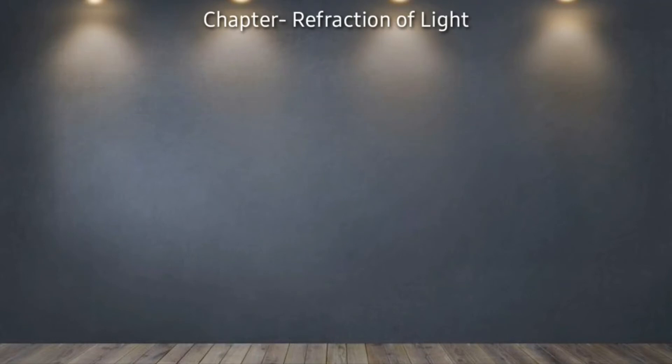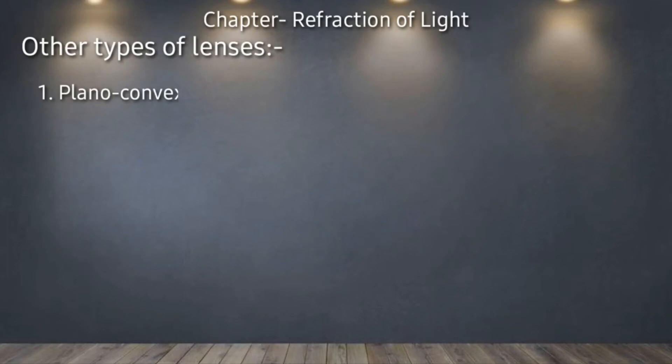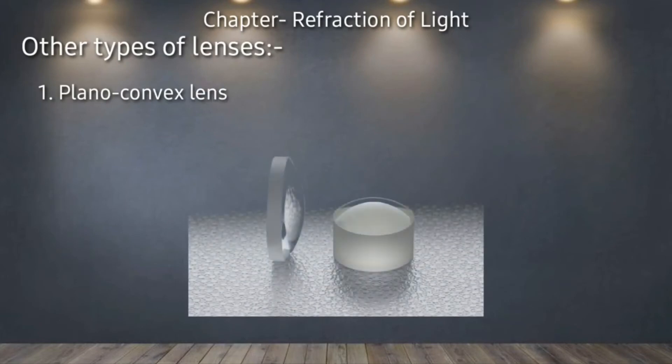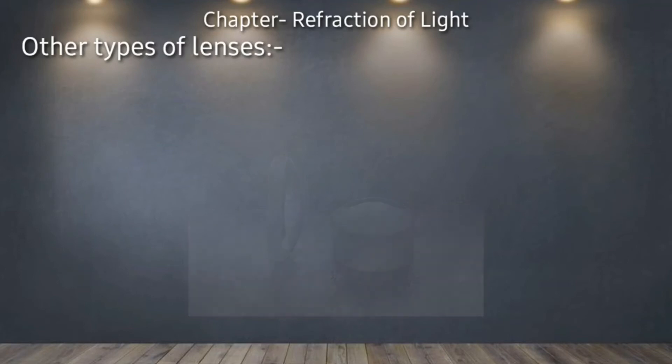Now let's discuss other types of lenses — what kinds of lenses we can see in the convex category. सबसे पहले हमारे पास आता है plano convex lens — एक ऐसा lens जिसकी एक side plane होती है और एक side convex होती है। इस तरह के lens को plano convex lens कहा जाएगा।